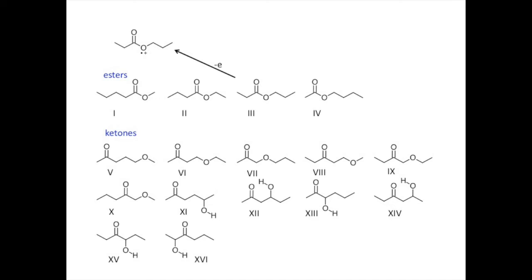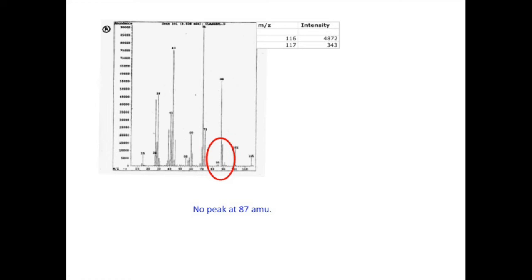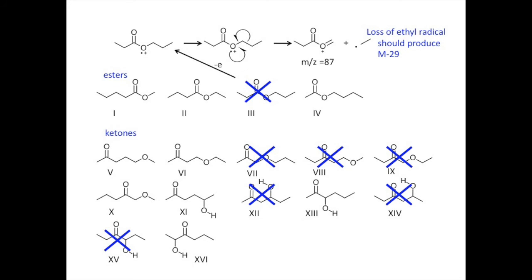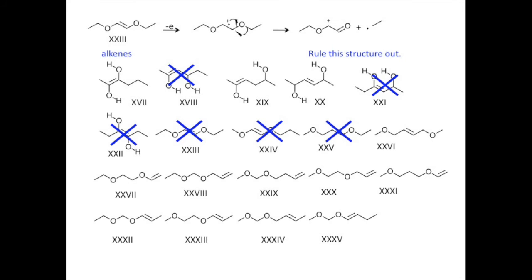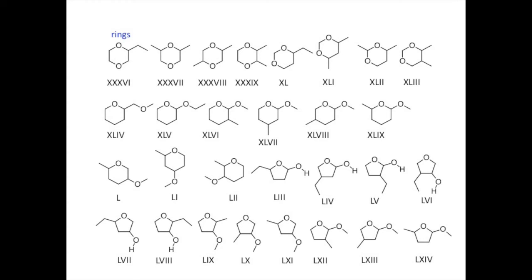Let's consider what a radical site-initiated cleavage mechanism will do in the case of structure three. If we ionize at the saturated oxygen atom, then the most likely bond to break will result in losing an ethyl radical. Do we see a peak at 29 atomic mass units below the molecular ion at a mass of 87? No, there's nothing there. So we can rule out structure three and many others that we would expect to lose an ethyl group. We can see that there are many alkene structures that we would expect to lose a neutral ethyl group as well. With an alkene, ionization can occur at the double bond as well. Subsequent alpha cleavage can also produce ethyl radicals. In a similar manner, we can predict the loss of an ethyl radical from two of these ring structures.